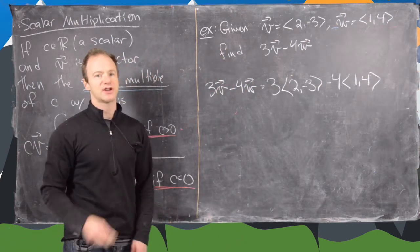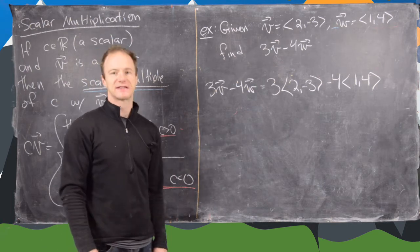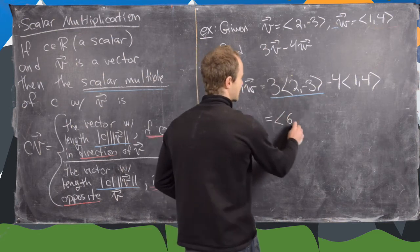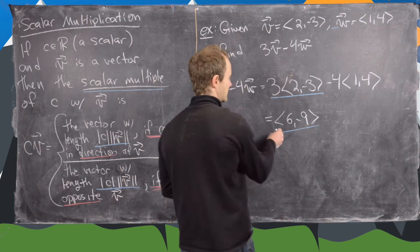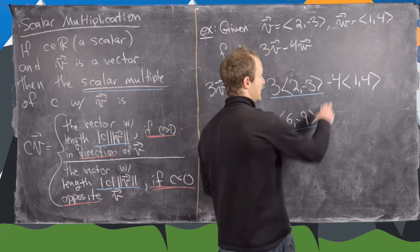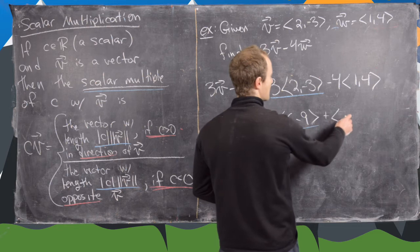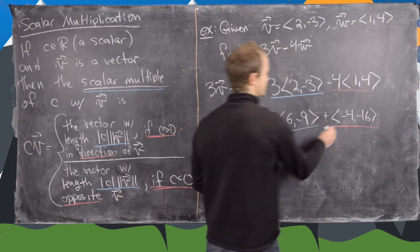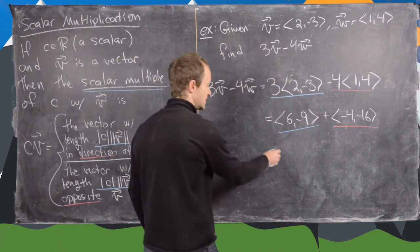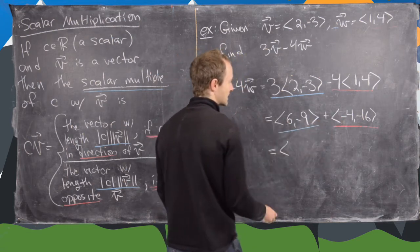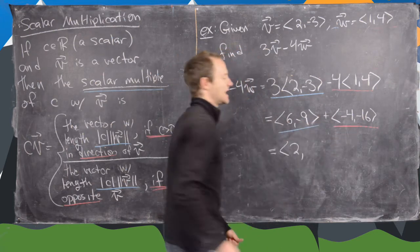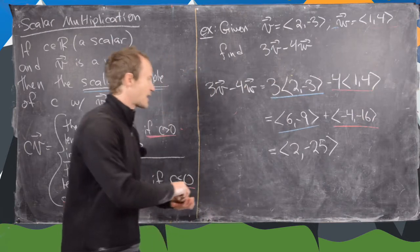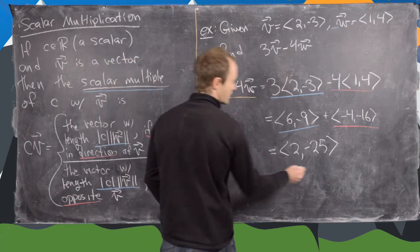But now we know scalar multiplication. We can just multiply the components by whatever the scalar multiple is. So this term right here will become (6, -9). And then we can, in essence, distribute this minus 4 inside. And this will become (-4, -16), the same way. And now we can use vector addition to just add these together. So 6 plus -4 is 2. -9 plus -16 is -25. So there we have our final answer. That is 3v minus 4w.